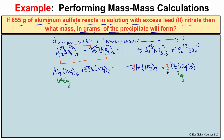Before starting the stoichiometry, we had to do several things: predict the products, determine which of the two products was the precipitate, balance our chemical equation, and write a chemical equation using correctly written chemical formulas. Now that we've done all of this, we can start the stoichiometry process.